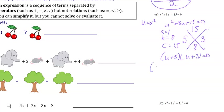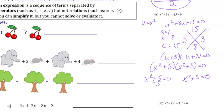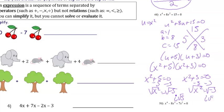Remember, u = x², so we replace the u's back with x²: (x² + 5)(x² + 3) = 0. Setting each factor equal to zero, x² = −5 and x² = −3. Taking the square root, we get imaginary answers. Since there are negatives inside the radical, we place i next to each answer. Our four solutions are x = ±i√5 and x = ±i√3.